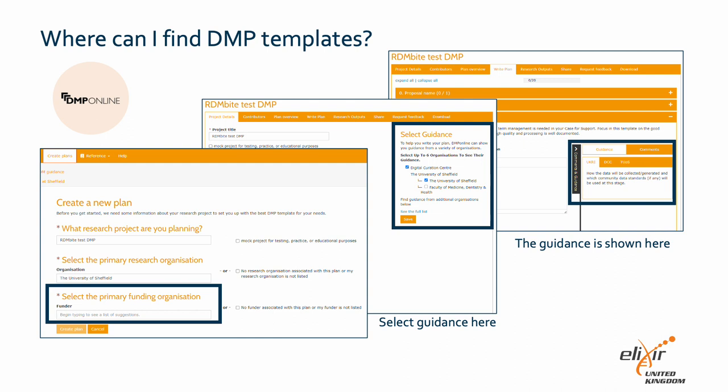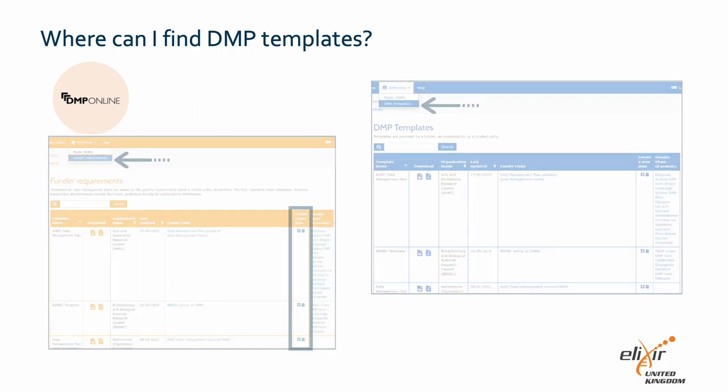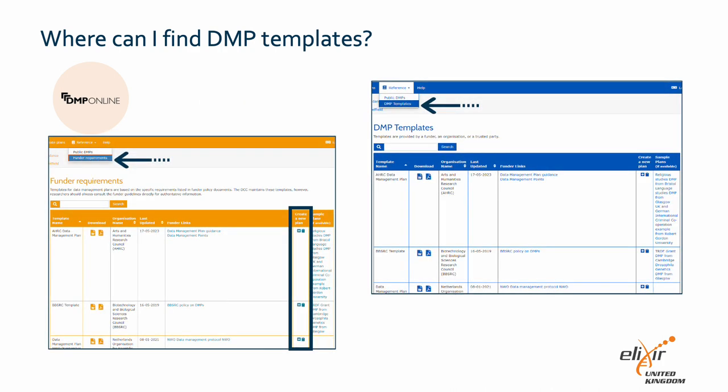The screenshot on the right shows how DMP template guidance is displayed while you write your DMP. Alternatively, you can start by finding your funder's template on the funder requirements page and create a DMP directly from there using that template by clicking create a new plan. The relevant column is highlighted by a box on the left screenshot. This page may be labeled as DMP templates if your institution has its own version of DMP Online, as shown in the right screenshot.